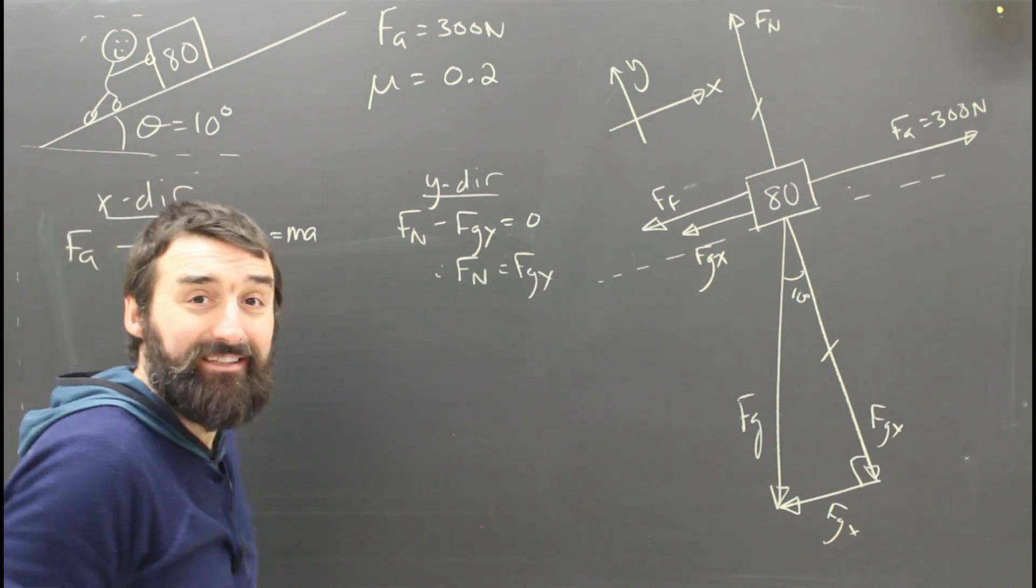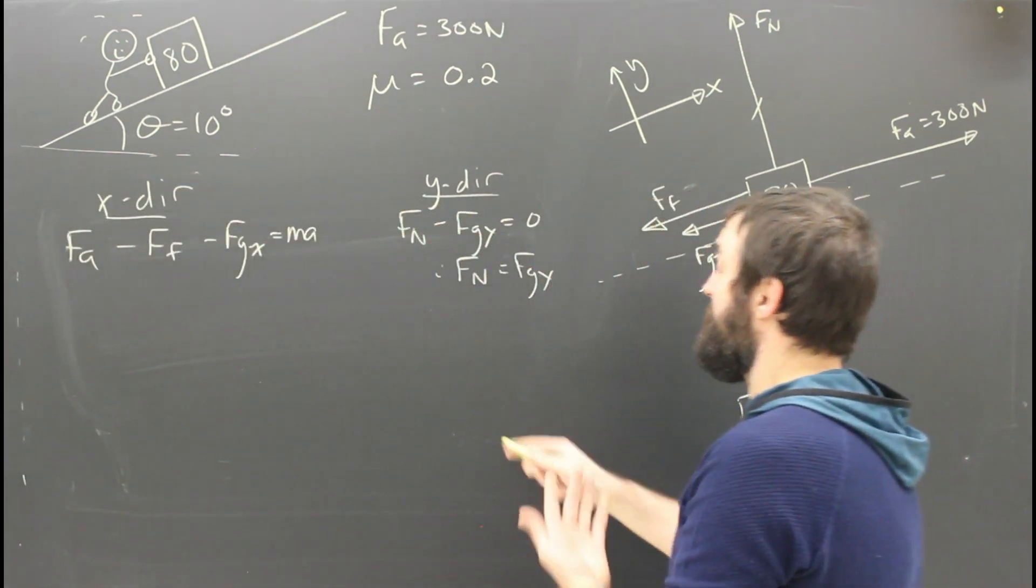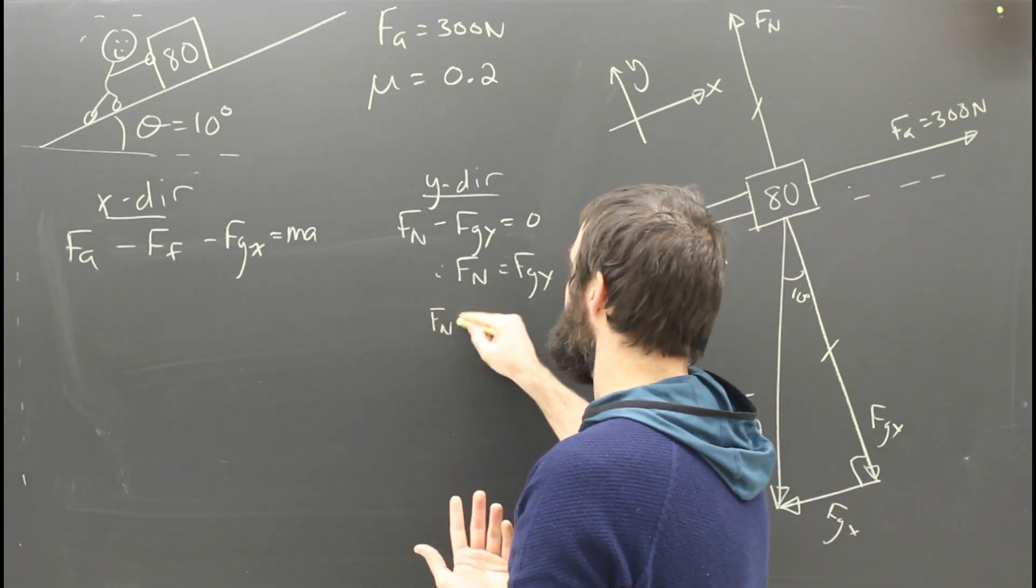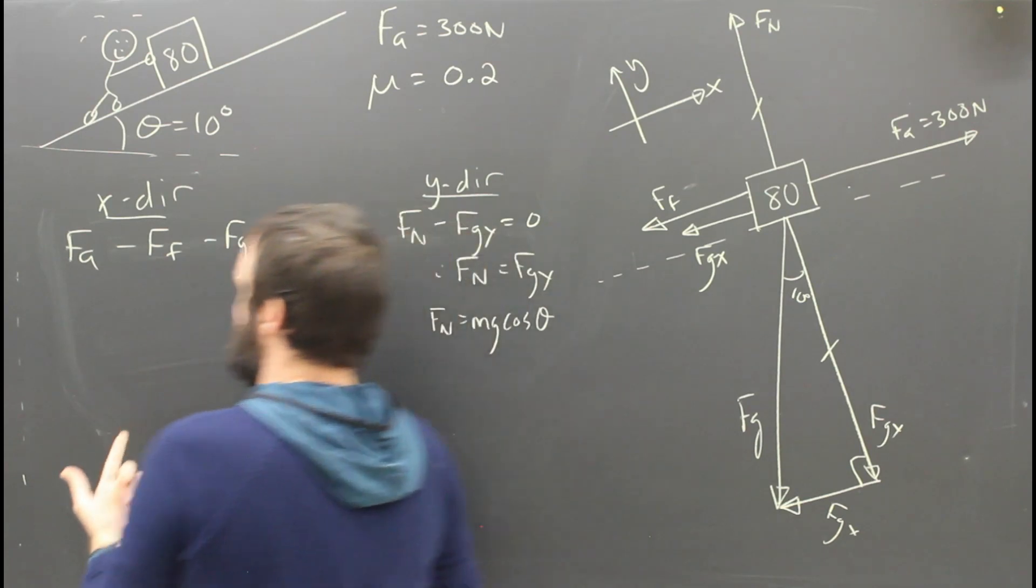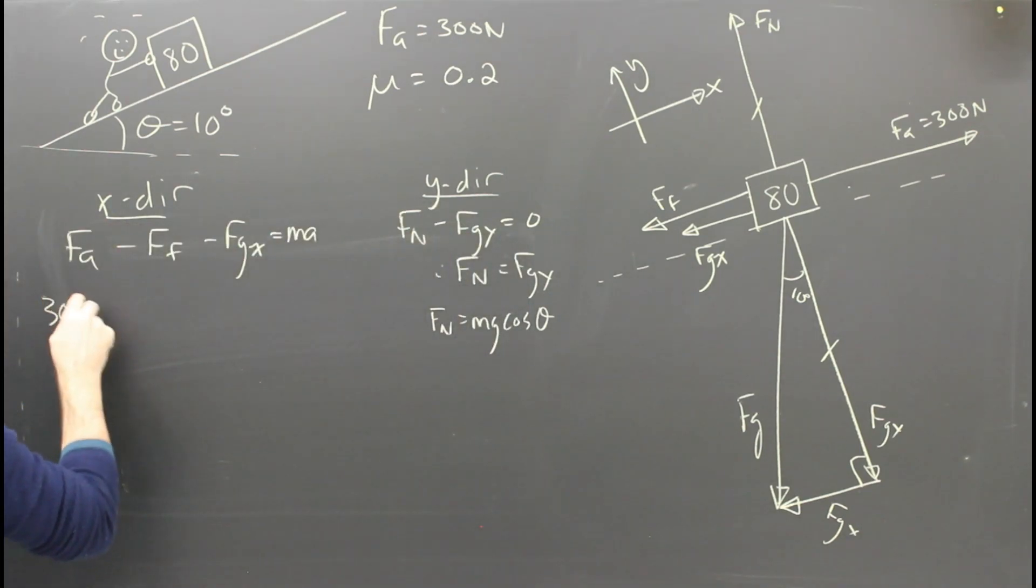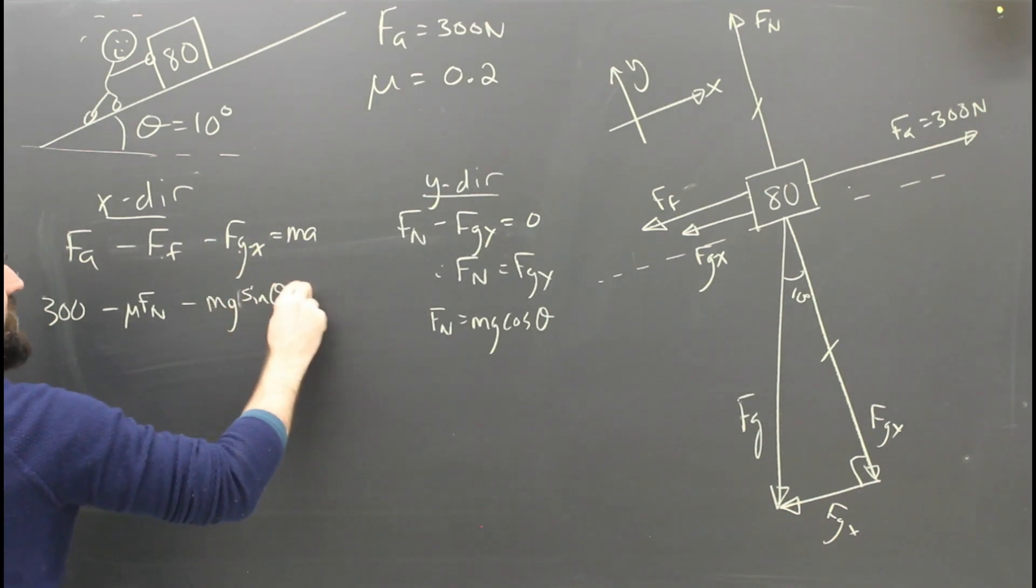You've practiced these. That's obvious. What am I trying to find? I still haven't really thought about it. But I'm going to shove everything in and solve. So I can see that FN is mg cos theta. Shoving in over here, I can see that 300 minus FF, well that's mu FN minus FGX, well that's mg sine theta, is equal to M, which is 80, times A.